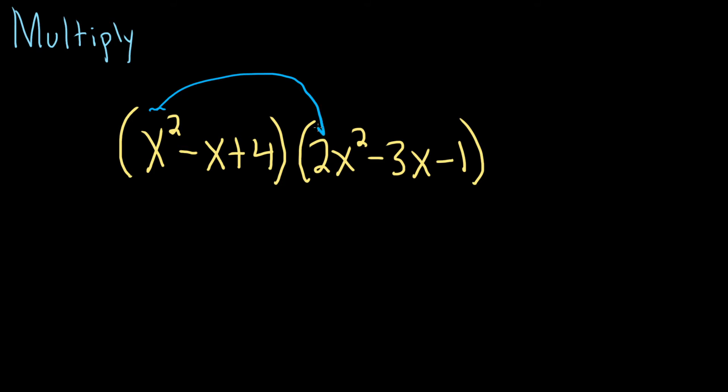x squared times 2x squared gives us 2x to the 4th - we multiply the coefficients and add the exponents. Then x squared times negative 3x gives us minus 3x cubed. And x squared times minus 1 is minus x squared. So that takes care of the x squared - we multiply it by each of these terms.